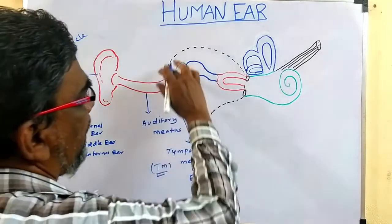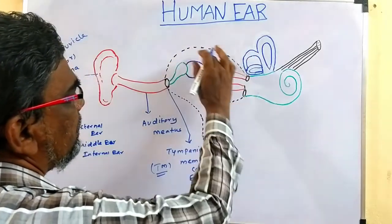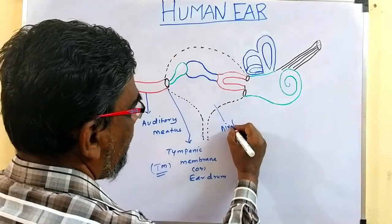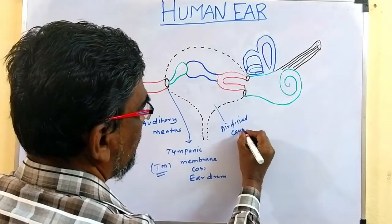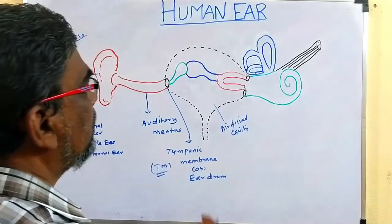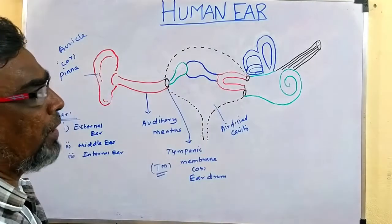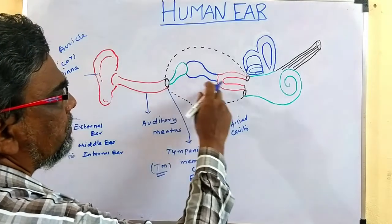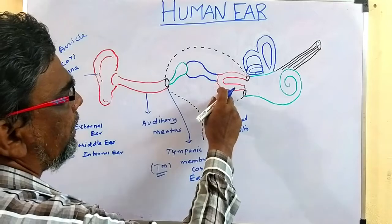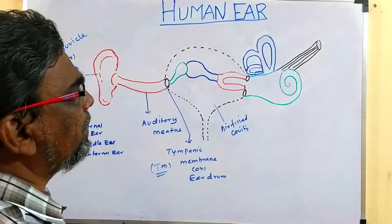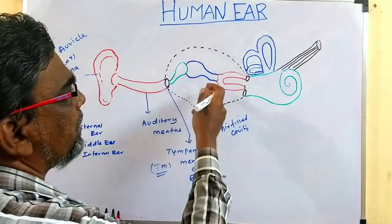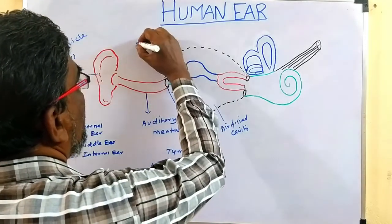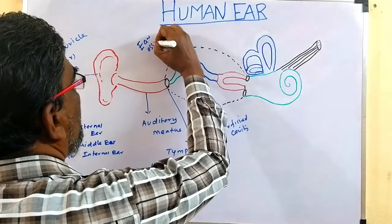Next to the tympanic membrane is an air-filled cavity called the tympanic cavity. In this structure, three small bones are present — the green, blue, and red colored ones. These three bones are collectively called ear ossicles.